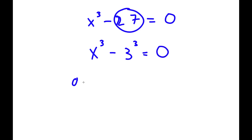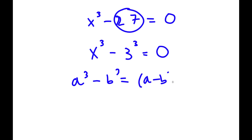Now, if I have something in the form a to the power of 3 minus b to the power of 3, this is equal to a minus b times a squared plus 2ab plus b squared.